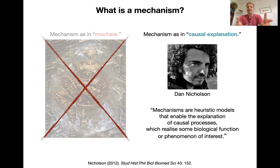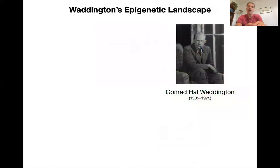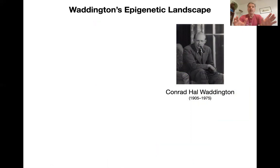What I want to do in this lecture and the next module is give you tools to think about how we could come up with explanations like that, how we could move beyond these types of networks. Because remember, these networks are idealized models — idealized representations of an actual system which is a patterned process. So we need to explain that process. Before we had this flood of networks in evo-devo, we had a wonderful conceptual framework to do this: Conrad Hal Waddington's epigenetic landscape.